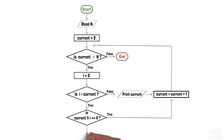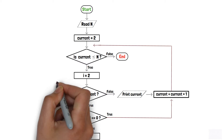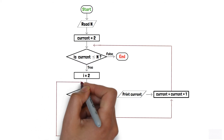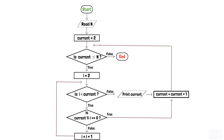But if the condition is false, that is if current modulo i is not equal to 0, then we simply increment i by 1 using a process box. A loop is then added back before the second decision box so that it will check whether i is less than current or not for each iteration.